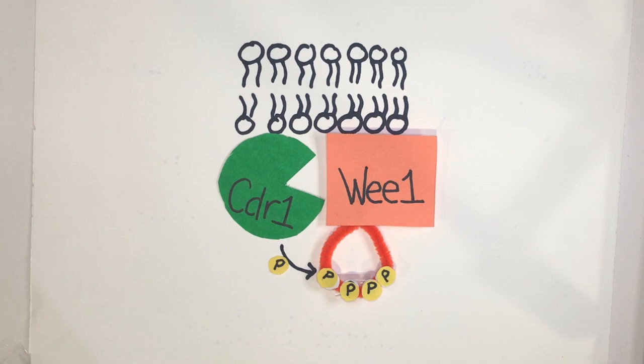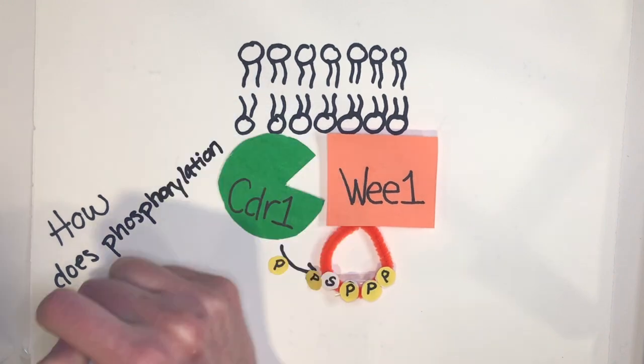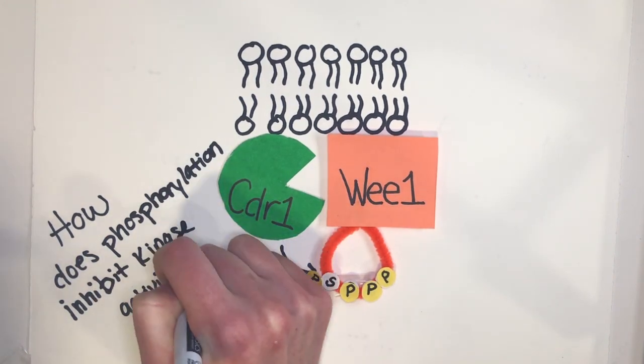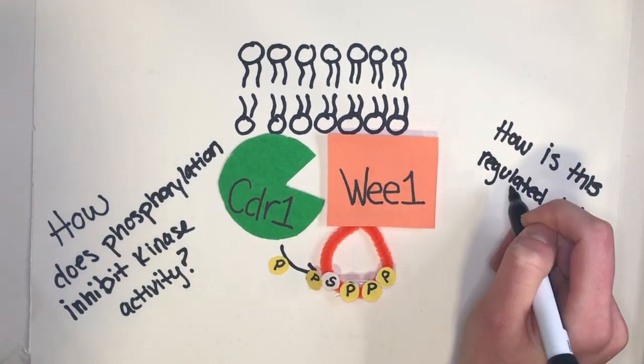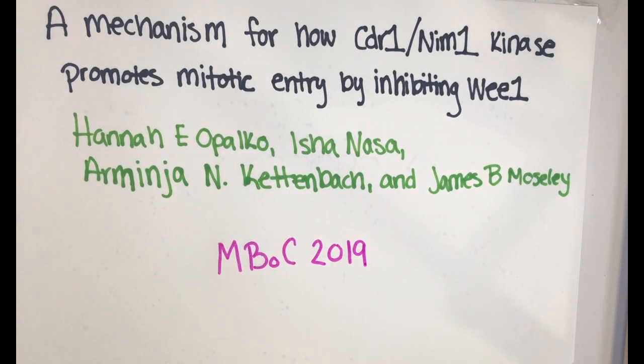We have answered several questions as to how CDR1 inhibits Wee1. We are now excited to study how phosphorylation inhibits kinase activity and how this pathway is regulated during the cell cycle. To find out more, please check out our paper in MBOC.